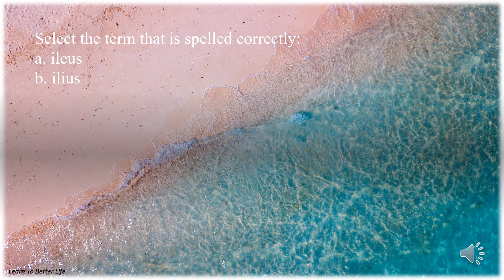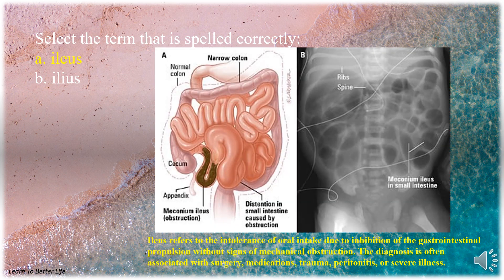Select the term that is spelled correctly. A. Ileus with the E. B. Ileus with the I. The answer is A. Ileus with the E.